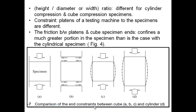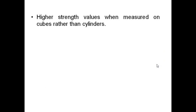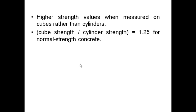Figure 4 shows comparison of the end restraints between cube A, B, C and cylinder D. Figures A, B and C relate to cube, whereas figure D is that of cylinder. Higher strength values are measured on cubes rather than cylinders. When the cubes are tested for compression, they give higher value as compared to that given by cylinders. Normally, cube strength by cylinder strength is 1.25. For normal strength concrete, cylinder strength divided by cube strength is 0.8. When we take cube strength divided by cylinder strength, 1 divided by 0.8 is 1.25. That means cube strength is normally 1.25 times cylinder strength for the same concrete.